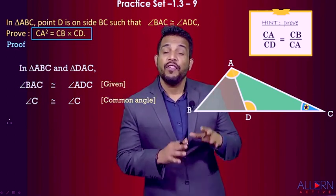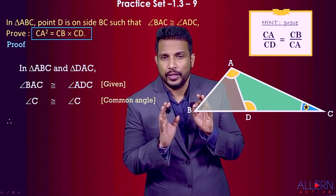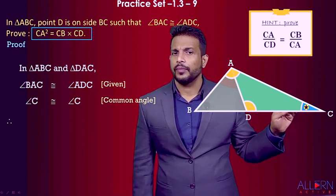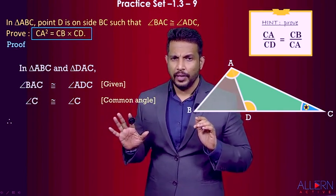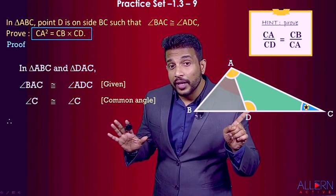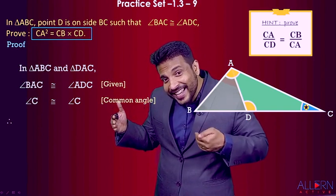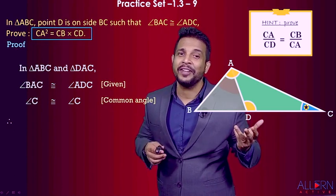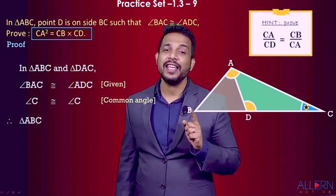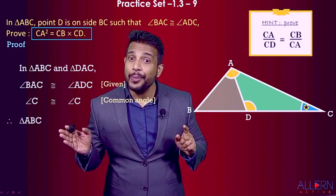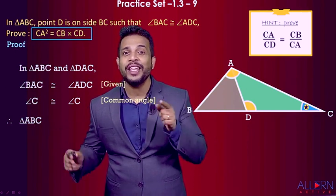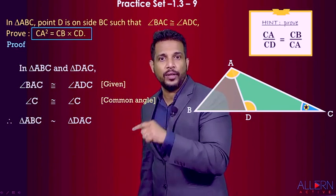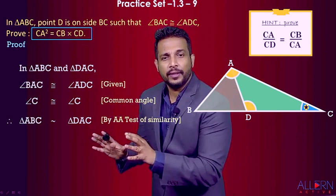Both triangles are similar, but we must write the similarity with correct one-to-one correspondence. In the bigger triangle ABC, angle A corresponds to angle D in the smaller triangle, and angle C corresponds to angle C. So whatever is left — B corresponds to A. Therefore the similarity is: triangle ABC ~ triangle DAC, by the AA test of similarity.